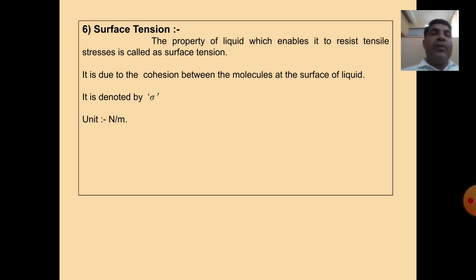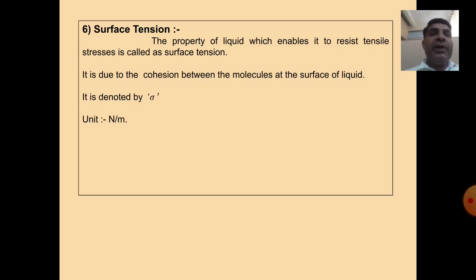The next property is surface tension. The property of a liquid which enables it to resist tensile stresses is called surface tension. Surface tension is due to cohesion between the molecules at the surface of the liquid. It is denoted by sigma, and its unit is Newton per meter.